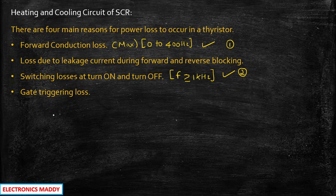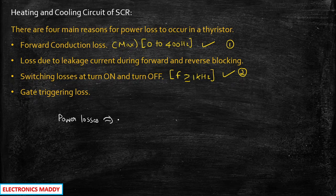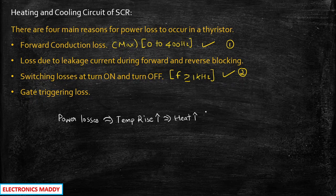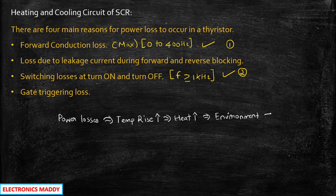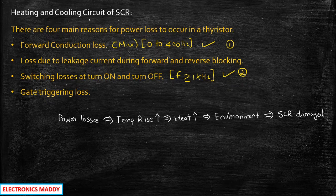As power loss increases during the operation of the thyristor, these losses result in an increase in the temperature of the device. When the temperature increases, the heat associated with the device will increase. And if this heat is not transferred to the surrounding environment, there are chances that the SCR might get damaged. So in order to prevent this, we need to have a heating and cooling circuit of SCR.